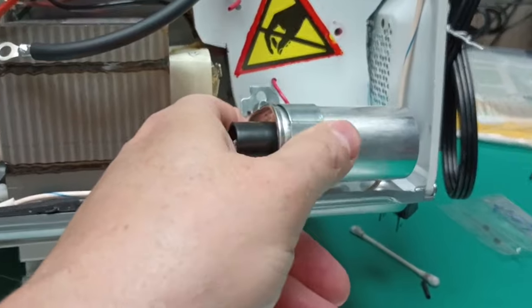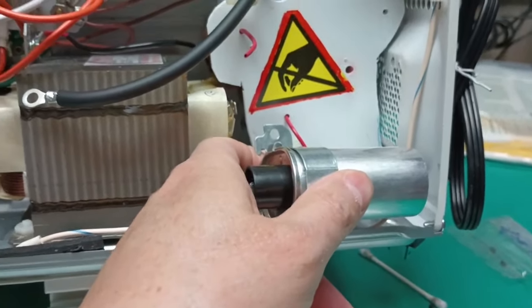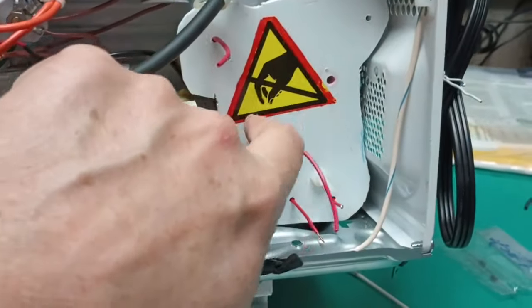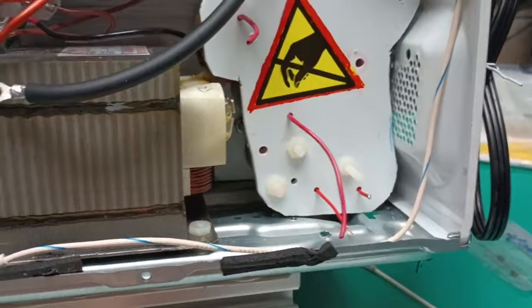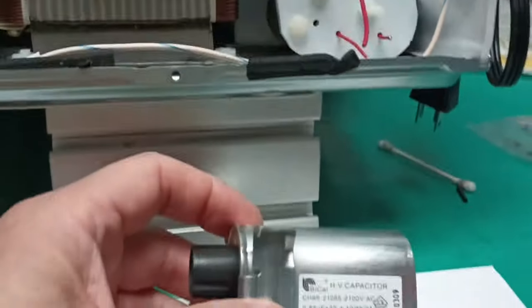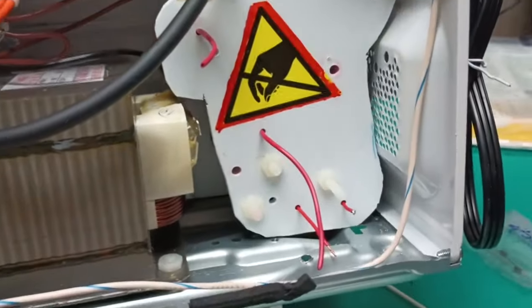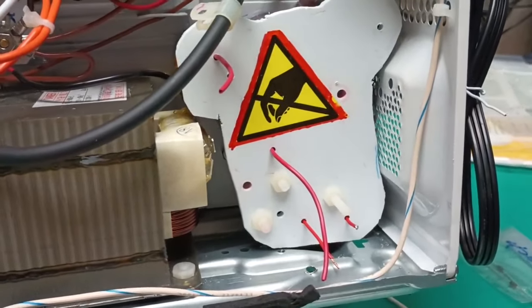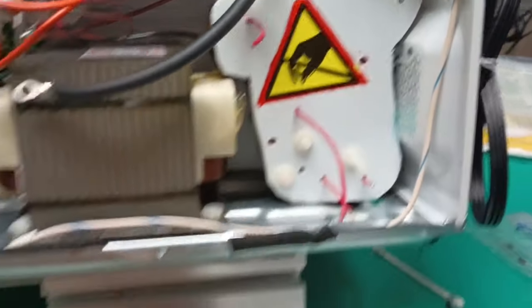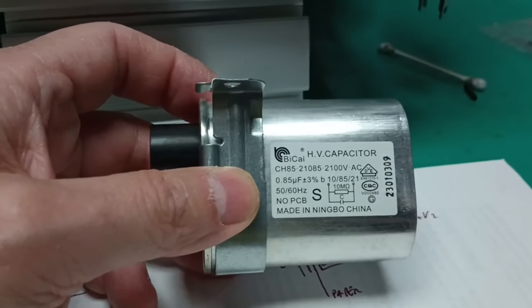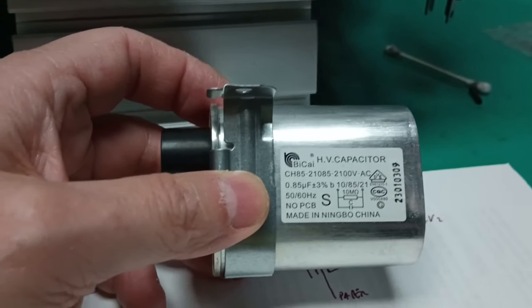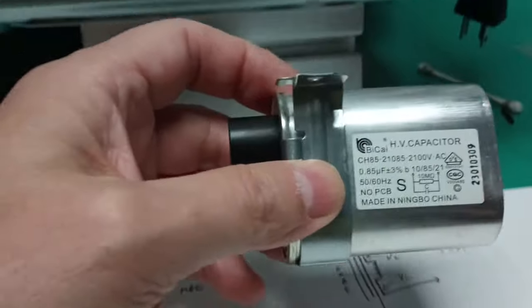There's 38 microfarad in here. That's kind of typical for RF power amplifier plate supplies. So if that's what's necessary to make a nice filtered 2KV plus supply, how are they getting away with 0.85 microfarad? That can't possibly filter that. Well, that's right.